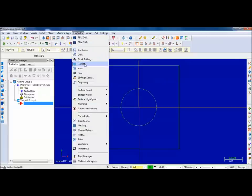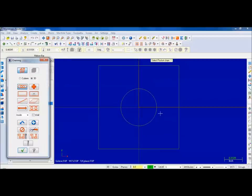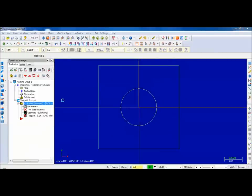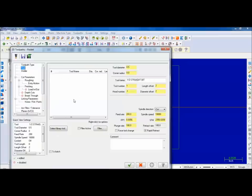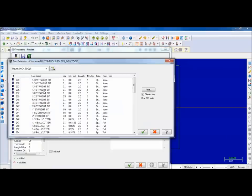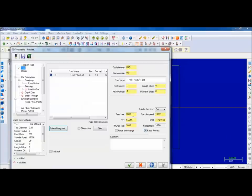So toolpath pocket. There's my pocket. I'm going to use a quarter inch flat end mill to drill this. Go about 60-30. My feed rate is 60. Plunge rate at 30. Usually half that of your feed rate.